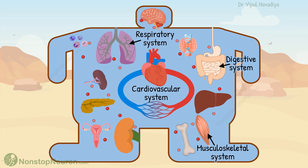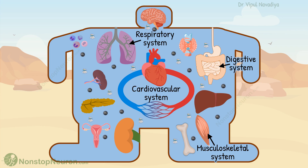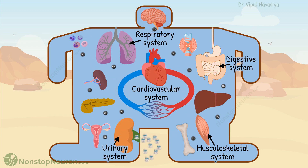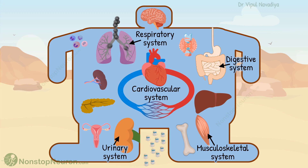The cell uses these nutrients to perform its functions and releases the waste products back into the internal environment. The urinary system removes these waste products from the internal environment. The respiratory system and liver also help in the cleanup process — the respiratory system removes carbon dioxide, and the liver detoxifies or removes drugs and chemicals ingested in the body.